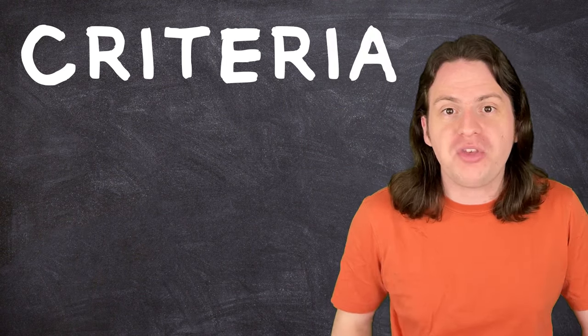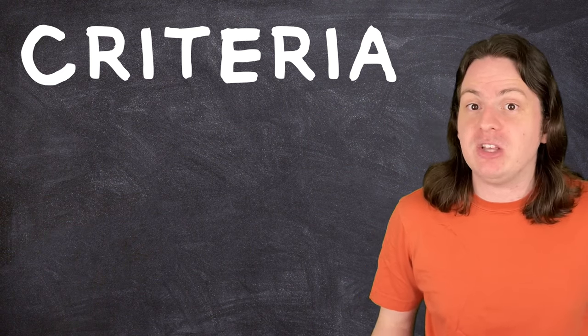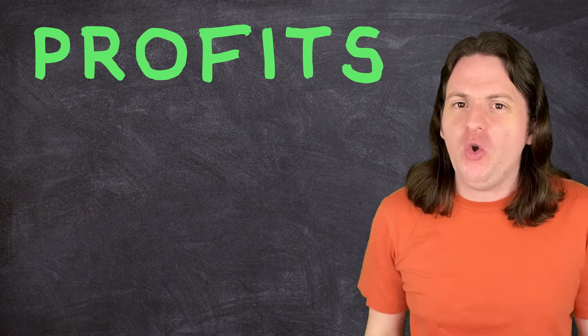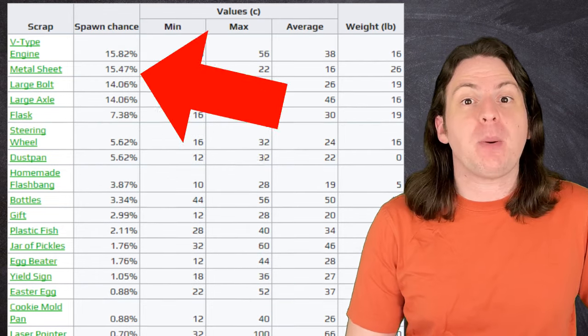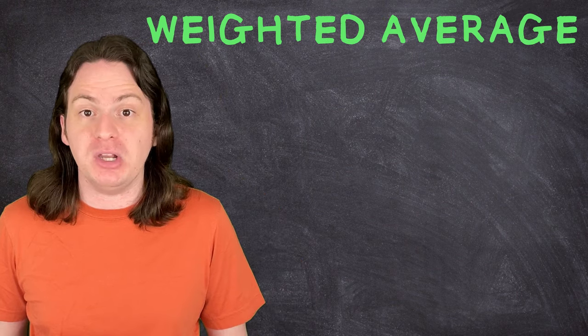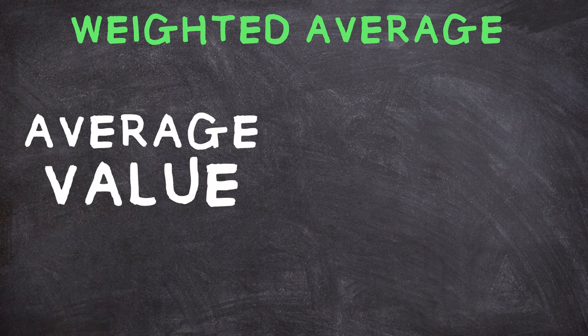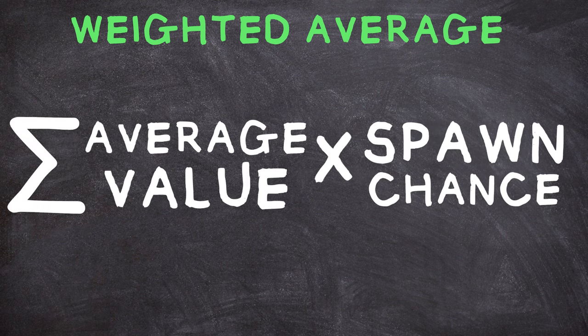The first step in the decision matrix process is to select our criteria, all the things that we want to judge these moons on. The goal is to find the most profitable moon, so the most obvious place to start is with your profits. Every single moon has its own unique table of items that can spawn, how much each of those items can be worth, and their percent chance of spawning. In order to find out which moon is the most reliably profitable, we need to take the weighted average of all the pieces of loot. We can do this by multiplying each piece of loot's average value by its percent chance to spawn, and then taking the sum of every piece of loot that can spawn in a given moon.